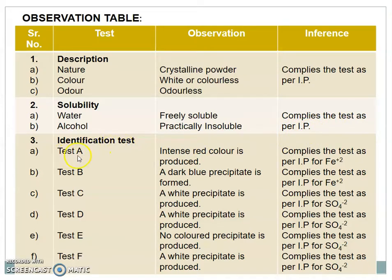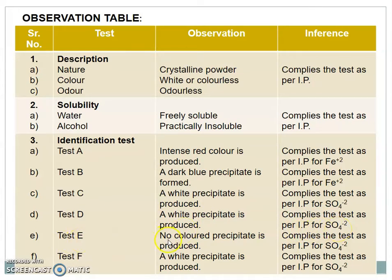Identification tests: Test A — intense red color is produced; complies as per IP for ferrous ion. Test B — a dark blue precipitate is formed; complies as per IP for ferrous ion. Test C — a white precipitate is produced; complies as per IP for sulfate ions. Test D — a white precipitate is produced; complies as per IP for sulfate ions. Test E — no colored precipitate is produced; complies as per IP for sulfate ions.